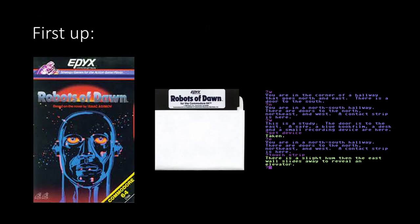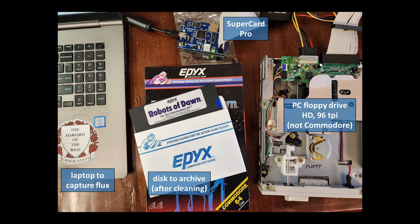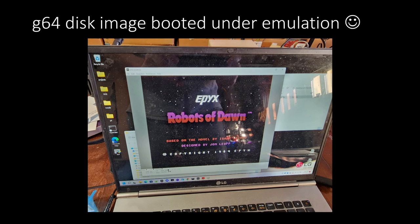First up is Robots of Dawn. This is my copy — I just recently broke the shrink wrap on this, and it had never been opened before. Even though it was shrink-wrapped, there was mold on the disk that I had to clean off before getting a good data dump. I put it into a PC floppy drive connected to a Supercard Pro device, which drives that drive to grab all the data and create a flux image and G64 image on my laptop. After that, I loaded the image in the emulator and successfully got past the copy protection.